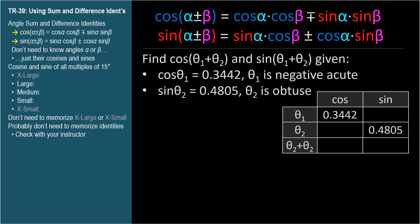When you use angle sum or difference identities, you're going to need the sine and cosine of both angles. We're given cosine θ₁, so what's the sine of θ₁? Sine θ₁ equals √(1 - cos²θ₁). This is from TR-34. Solving, we get sine θ₁ equals negative 0.9389. We use the negative root because we're told the angle is negative acute, so the terminal side must be in quadrant 4 with a negative sine.